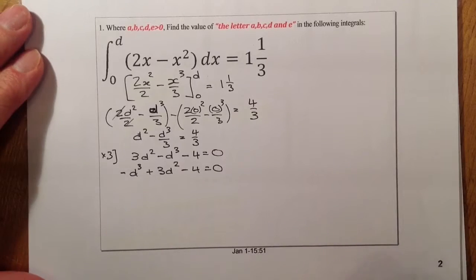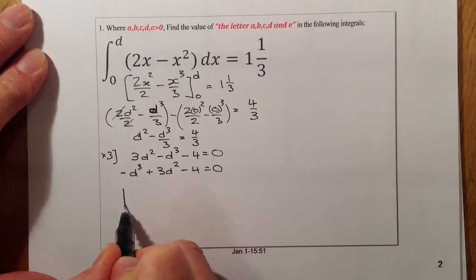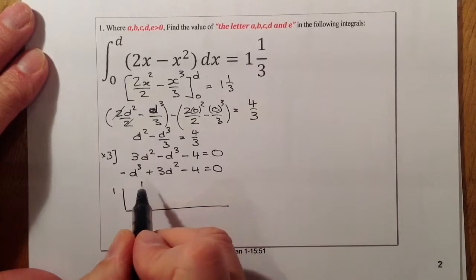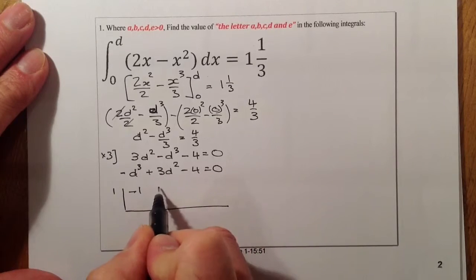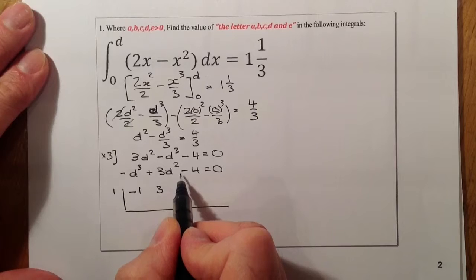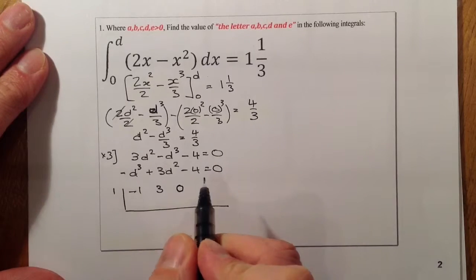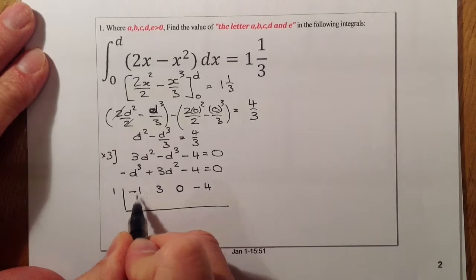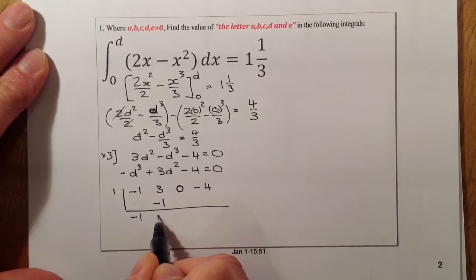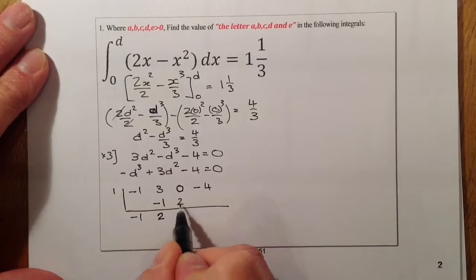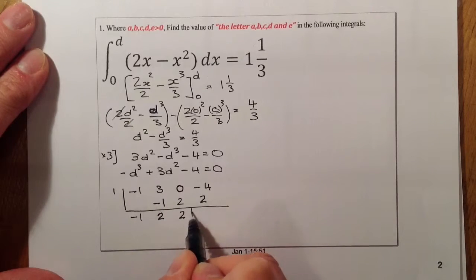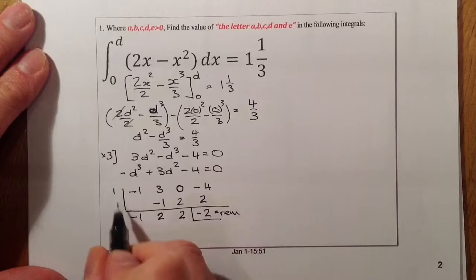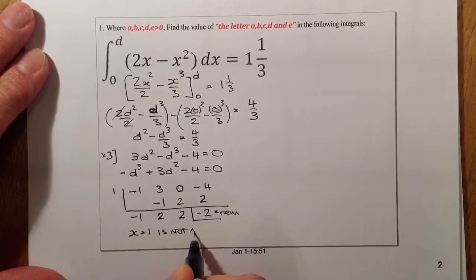Setting up synthetic division with coefficients minus 1, 3, 0, minus 4 — note the 0 for the missing D term. Trying x = 1: bring down minus 1, multiply to get 2 there, gather up gives 2, and I can see that's not going to work out — that equals my remainder. So x equals 1 is not a root.